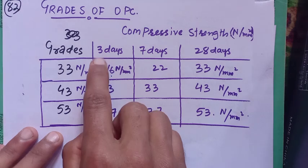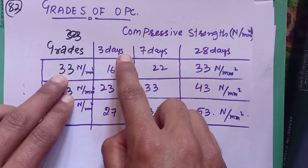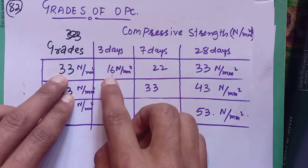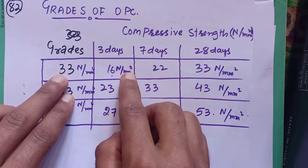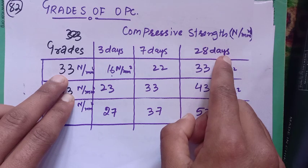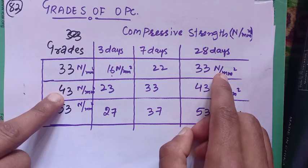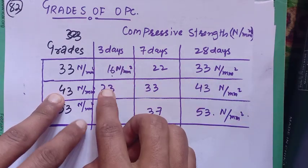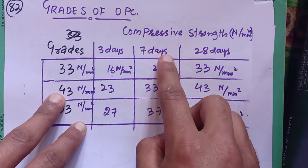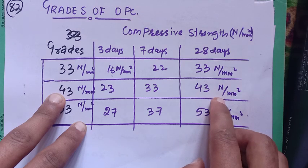Now I will discuss the day-wise strength development. After three days, the strength of a cube of 33 grade cement must be 16 Newton per mm². For the seventh day it must be 22 Newton per mm², and for the 28th day the strength attained must be 33 Newton per mm². For 43 grade of cement, after three days 23 Newton per mm² of strength must be attained, for the seventh day 33 Newton per mm², and for the 28th day the complete strength of 43 Newton per mm² must be attained.